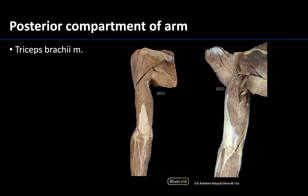The posterior compartment of the arm is a bit easier as there is one main muscle: the large triceps brachii. In a superficial dissection you can only see two of the three heads — the long head and the lateral head — which come together and share a common tendon attaching to the olecranon of the ulna. A deeper dissection, with the long head partially removed, is needed to see the medial head, which is more deeply placed.